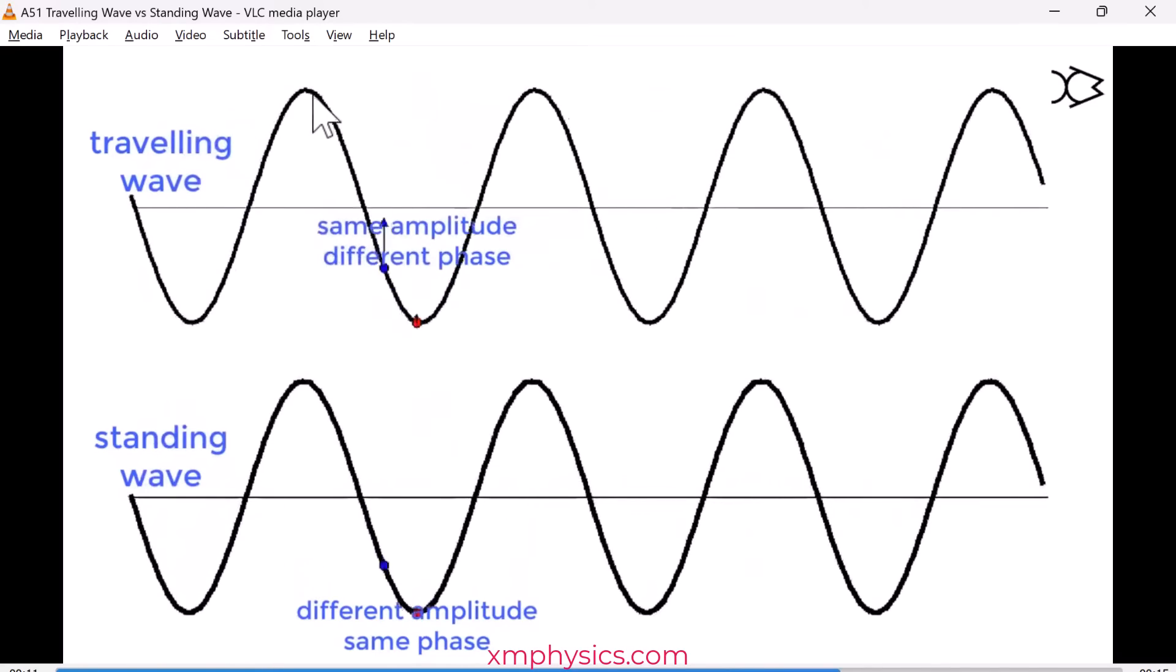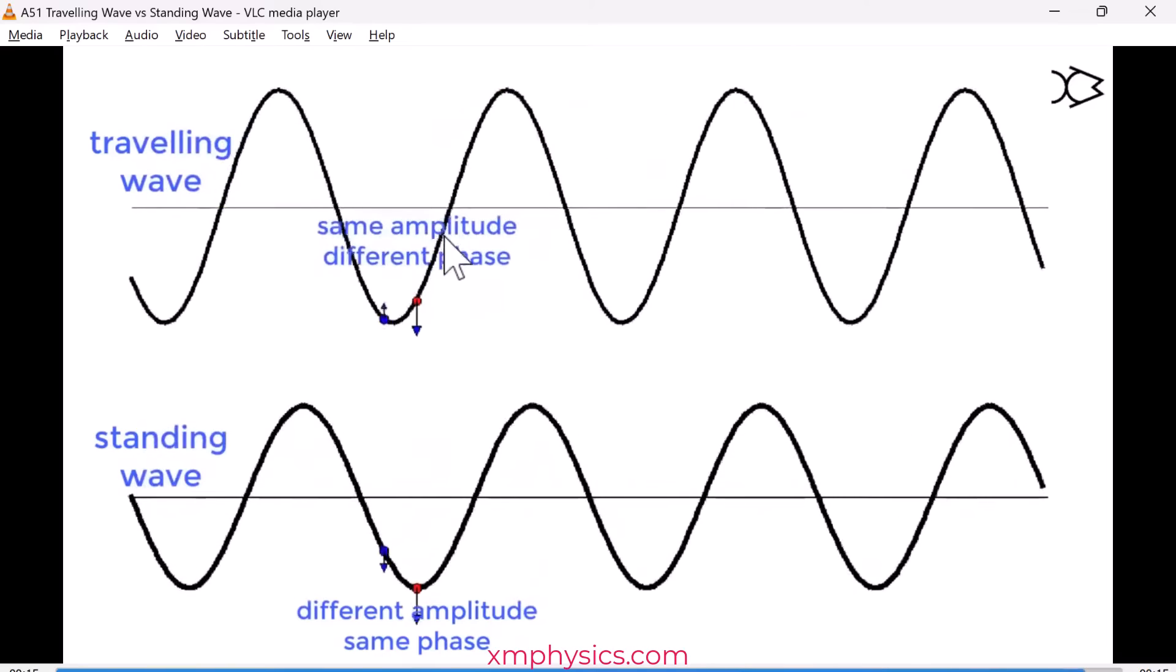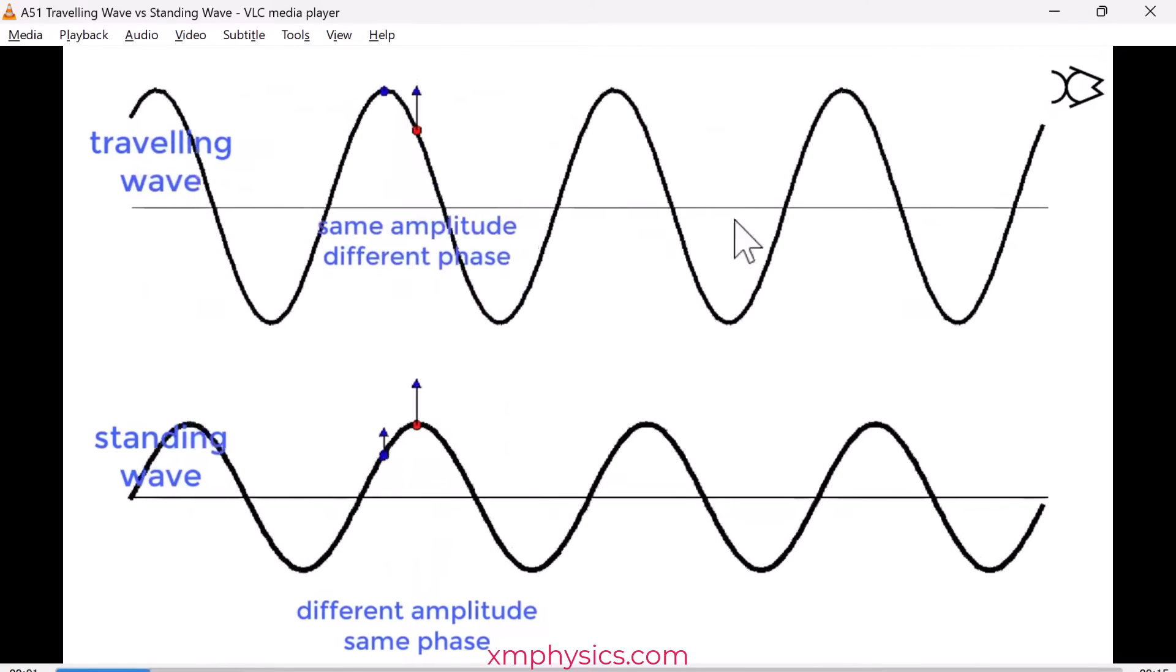In fact, every point on the wave reaches the same amplitude. So the amplitude is uniform, constant throughout a traveling wave.